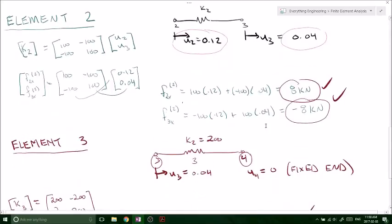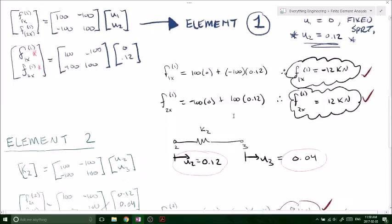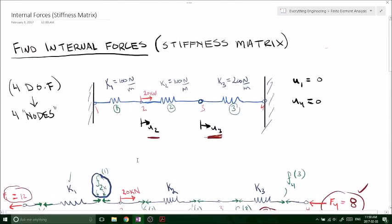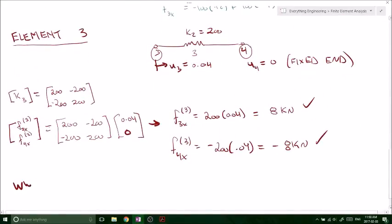And as we can see here, our F4 is 8 kilonewtons. So everything works out. Everything balances out. We are now in equilibrium. So thanks for watching. Check out my website at everythingeng.com.